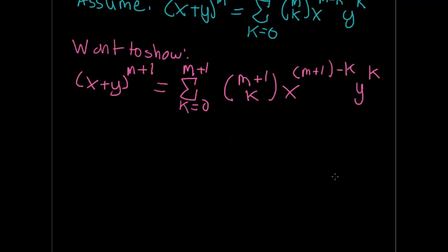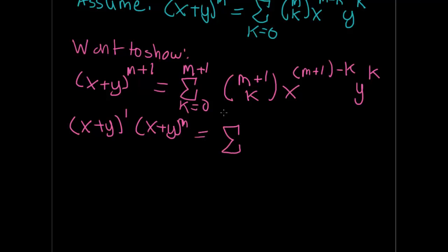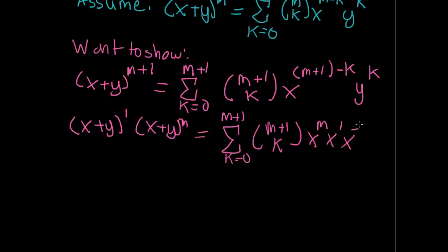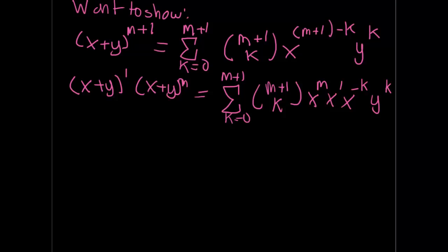We're going to use some algebraic manipulation to get the left hand side equal to the right hand side. x plus y to the m plus 1 simplifies to x plus y to the first power multiplied by x plus y to the m-th power, which by our inductive hypothesis equals x plus y times the summation of k equals 0 to m of m choose k, x to the m minus k, y to the k.